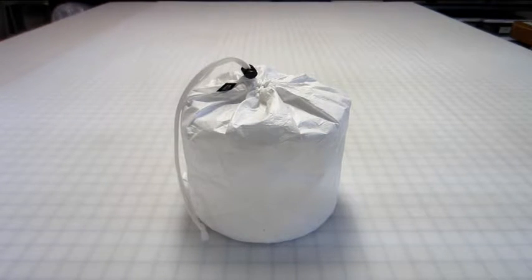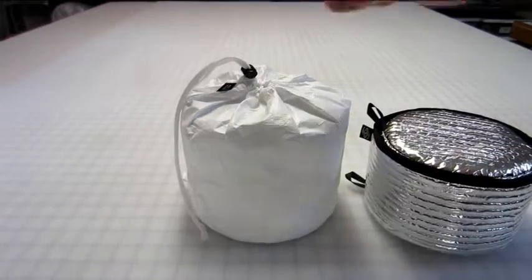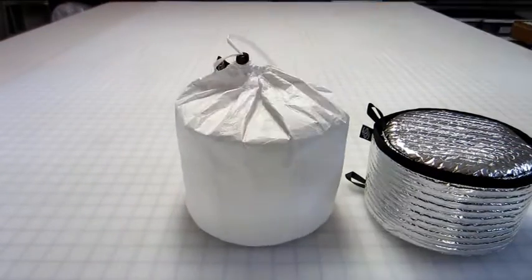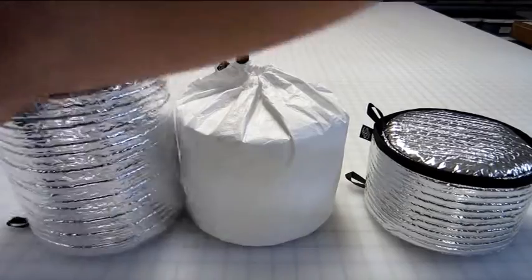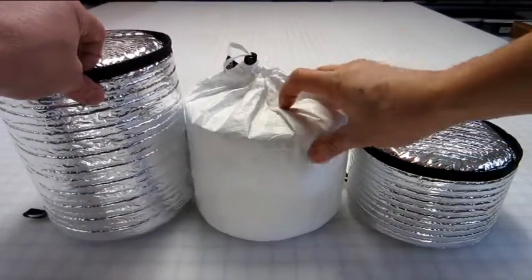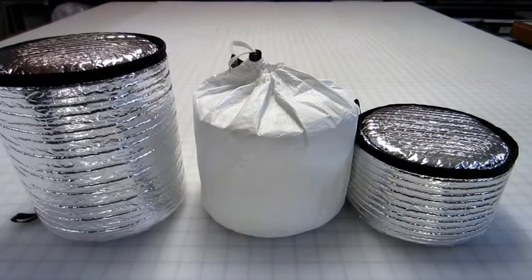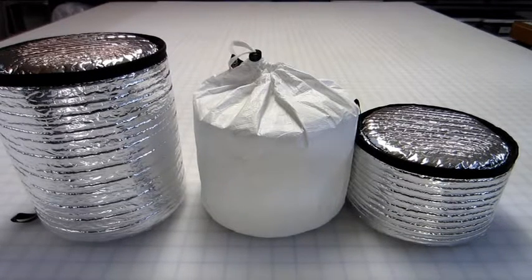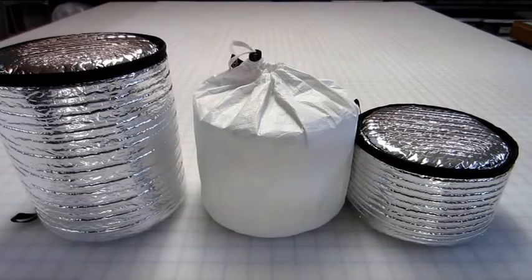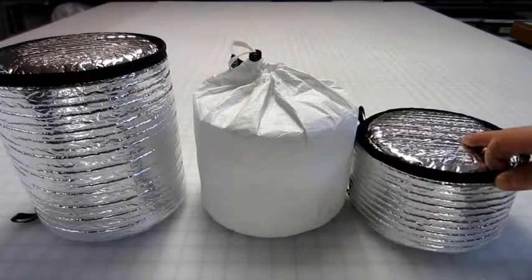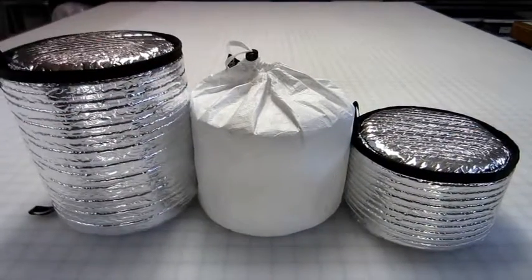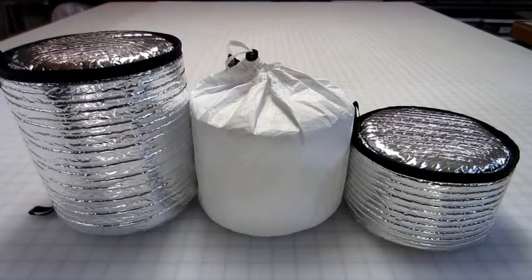SkatePods are made from Reflectix. Reflectix is a metalized aluminum kind of layered with plastic. And in between the layers are these tiny little air spaces. It's almost like bubble wrap. It's perfect material for an insulator.